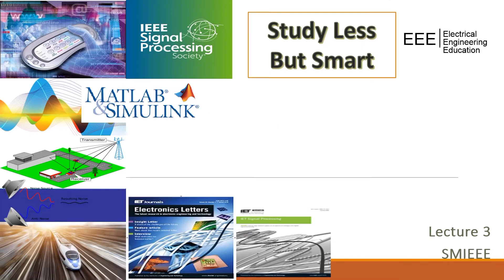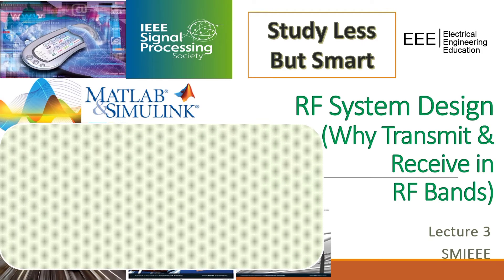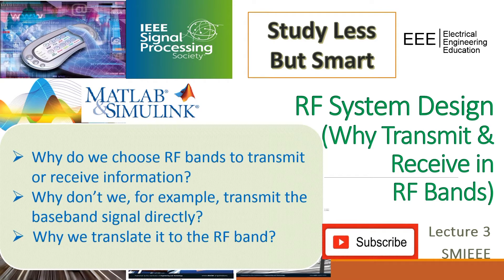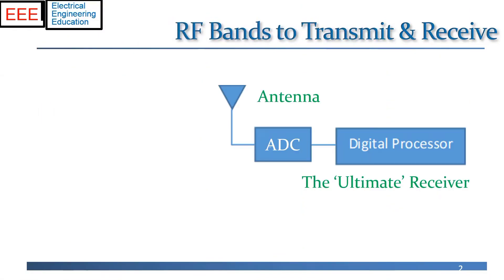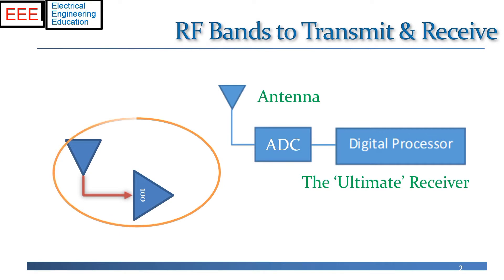In the previous video, we covered a bunch of reasons that the antenna connected with an ADC followed by a digital processor doesn't work well for radio frequencies. One of them, for example, was that the signal is so weak that it would actually require a 100 decibels amplifier at the input of the ADC to get the signal at the desired level. And this is a big difficulty, especially for handheld devices — we can't do that.